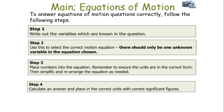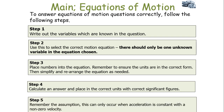At GCSE, it's best practice to substitute the numbers in first and then rearrange, because you obtain marks for showing you can recognise the terms correctly. Step four: calculate an answer with the correct units and correct significant figures. Step five: remember the assumption — this can only work if the acceleration is constant.